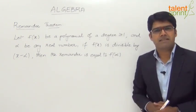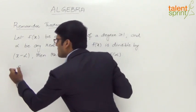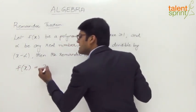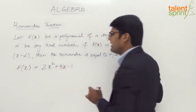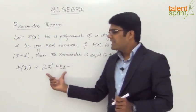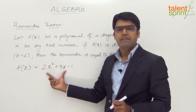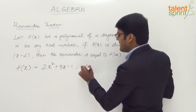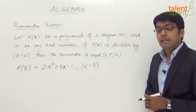Let us understand this with the help of an example. Let f of x be equal to 2x squared plus 5x minus 1. This is a second degree polynomial, and the degree should be greater than or equal to 1. Let us consider some real number alpha equal to 3.